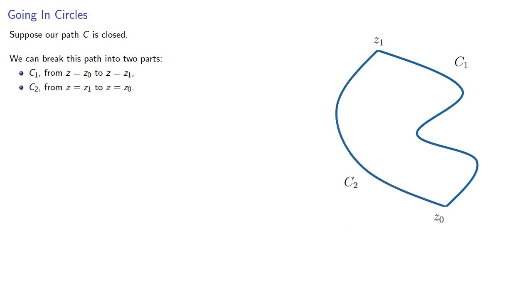Suppose our path C is closed, in other words, we get back to our starting point. We can break this path into two parts, say C1 going from some starting point to some midpoint, and C2 going from the midpoint back to the starting point.